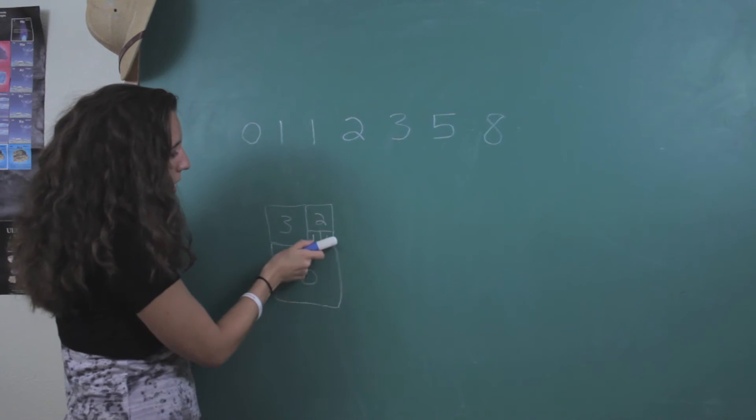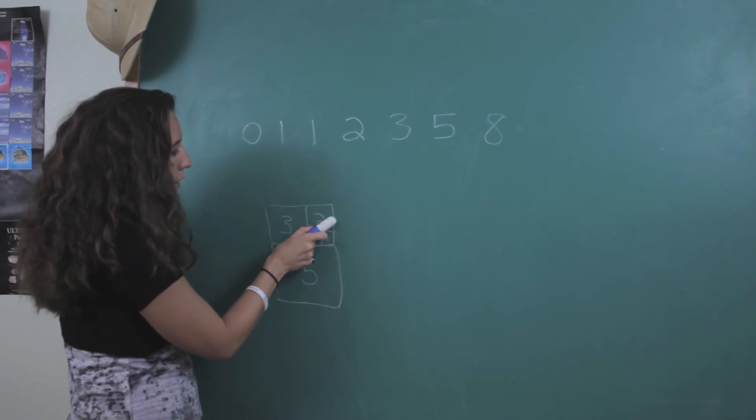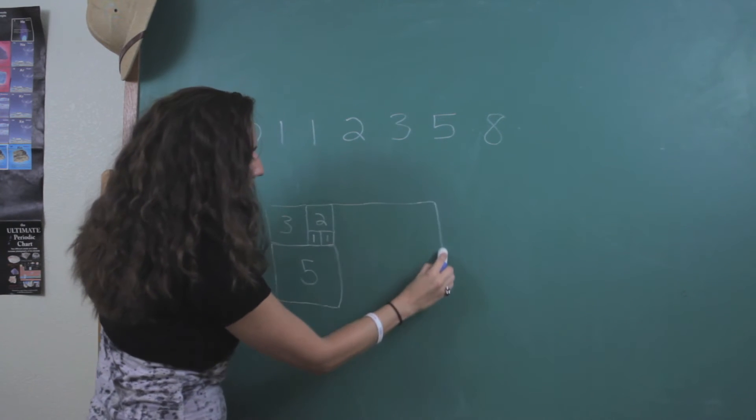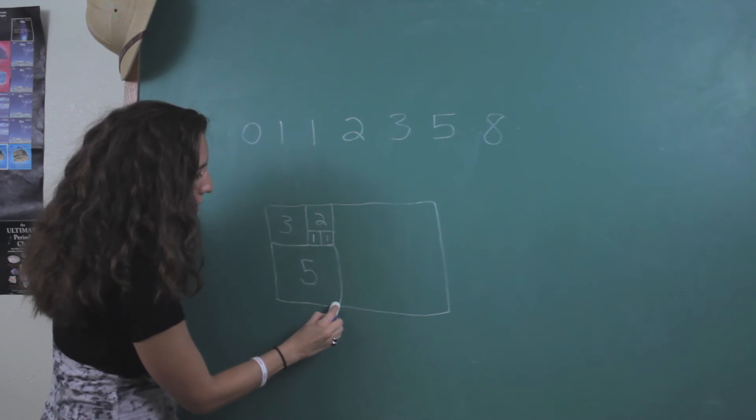And then I'm going to keep going. So I'm going to have five, six, seven, eight, which is our next number here. So make that into a giant square.